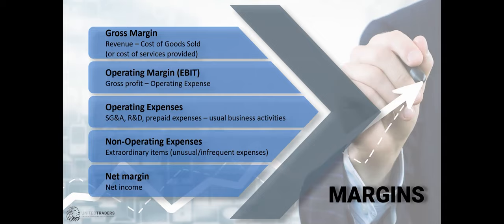We covered operating expenses — within the usual scope of business. We also have non-operating expenses, which are extraordinary items: restructuring, losses, employees leaving — expenses that are unusual and infrequent, but not both. Finally, we have the net margin, which is based on net income. People often ask which margin is most important. They're all important, and hopefully now you understand why.